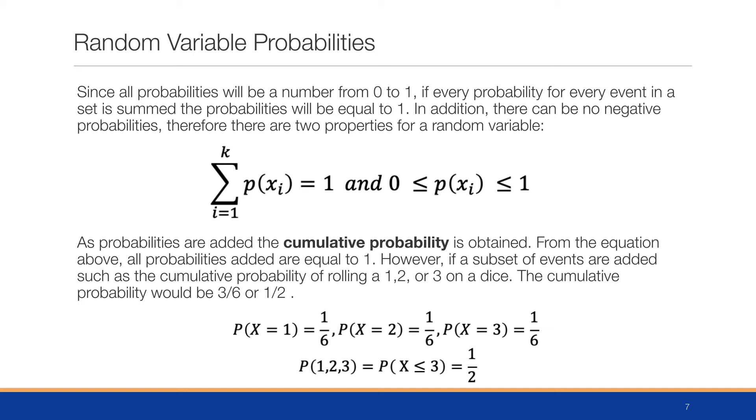From the equation above, since all probabilities added equal one, we can successively add each previous probability and get larger and larger until we get to one. If a subset of events are added together, the cumulative probability of rolling a one, two, or three on a dice, the cumulative probability would be 3/6 or one half. The probability of x equals one is 1/6, probability of x equals two is 1/6, probability of x equals three is 1/6. Therefore, the probability of x less than or equal to three equals one half.